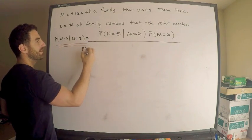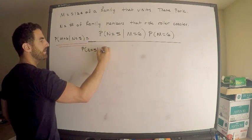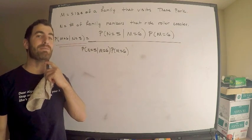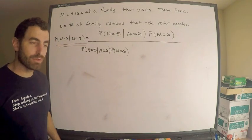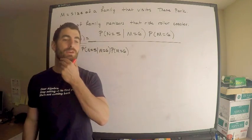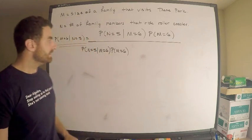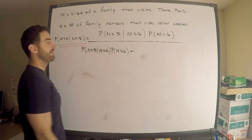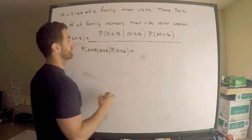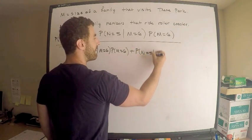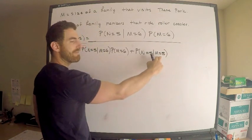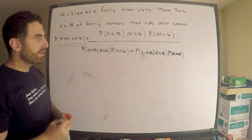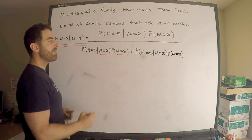I'm going to write this again. Give myself some more room. So probability N equals five given M equals six, probability M equals six. So what else can happen besides there being six members in the family? Now remember, we want to know, we're given that there are five members riding the roller coaster. If there are five people, five members of the family riding the roller coaster, there cannot be less than five members in the family. So what else can happen? Well, we could have all five riding the roller coaster. We could be having that all five of them, there are only five members and they're all five riding the roller coaster. So in other words, we could have the probability that N equals five given M equals five, times probability M equals five.